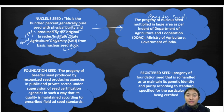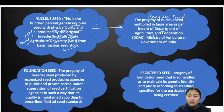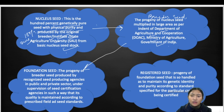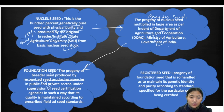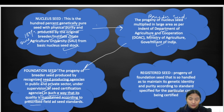Breeder seed is the progeny of nucleus seed, multiplied in a large area as per the intent of the Department of Agriculture or Ministry by the Government of India. The progeny of breeder seed is known as foundation seed. Foundation seeds are produced by recognized seed-producing agencies — whether public or private sector — under the supervision of seed certification agencies.